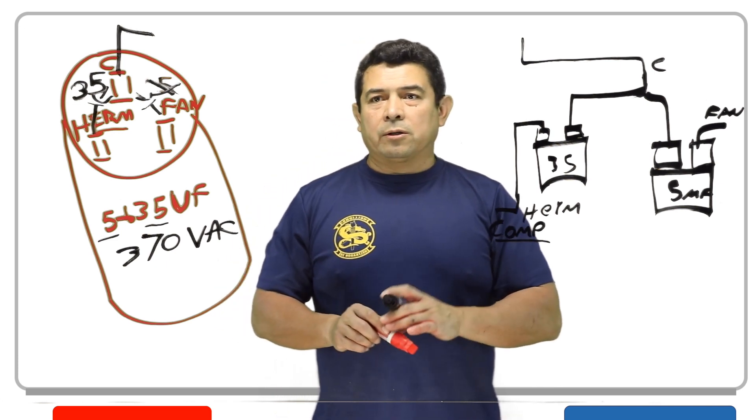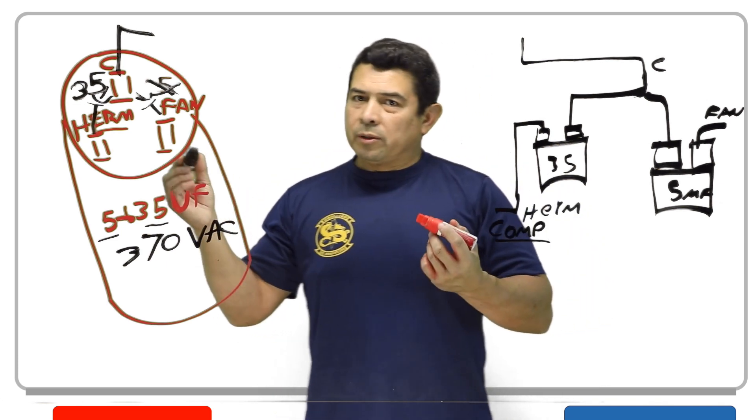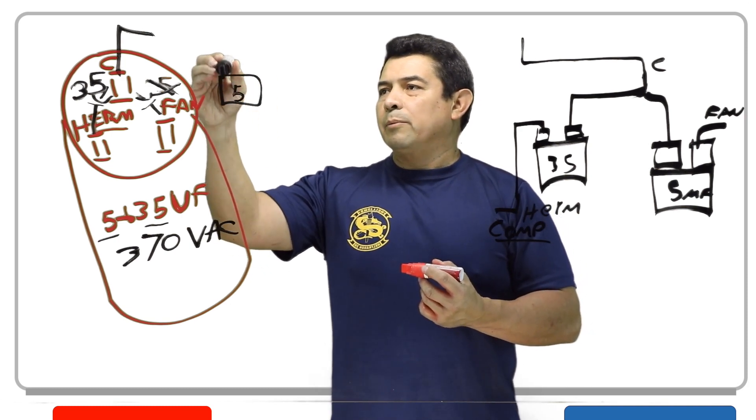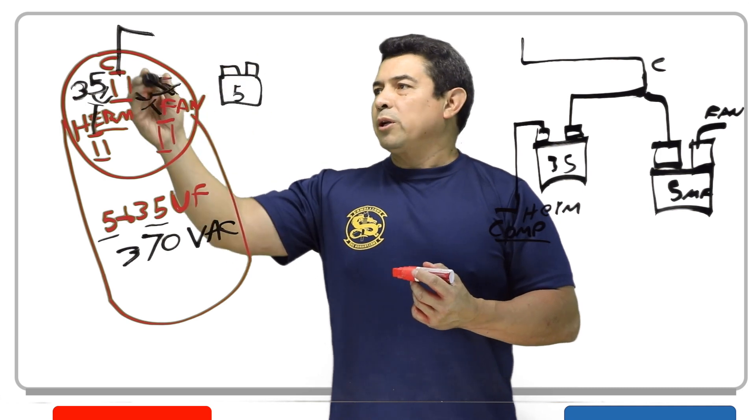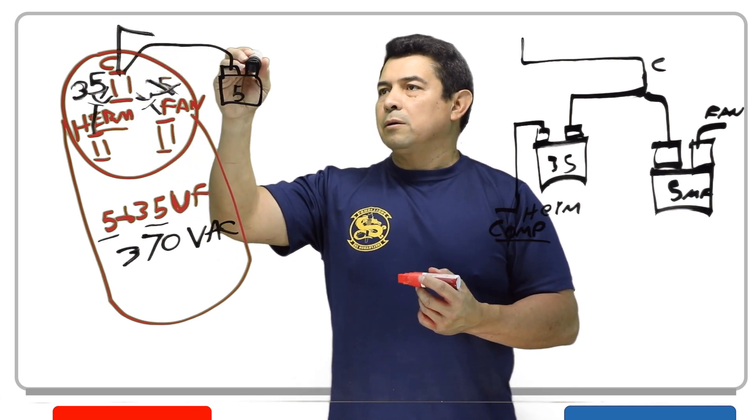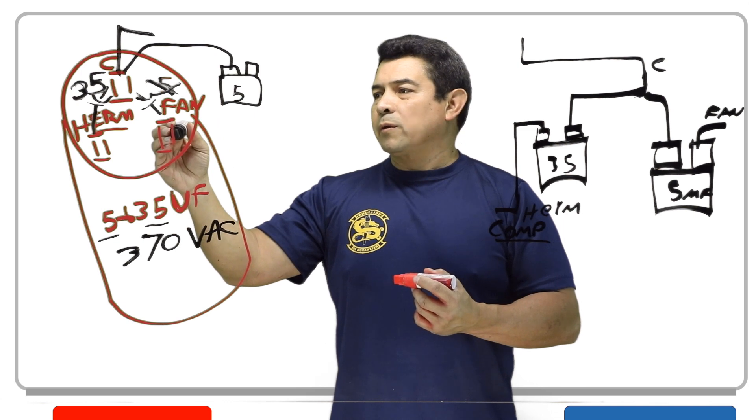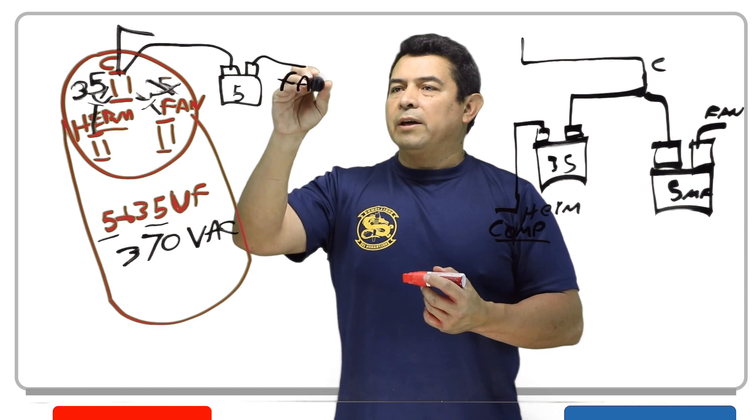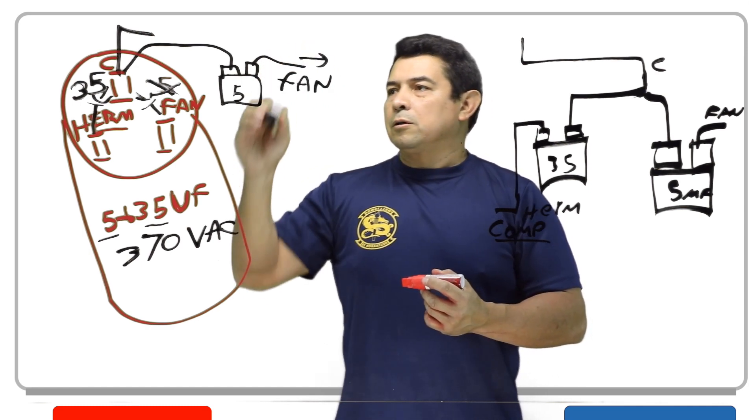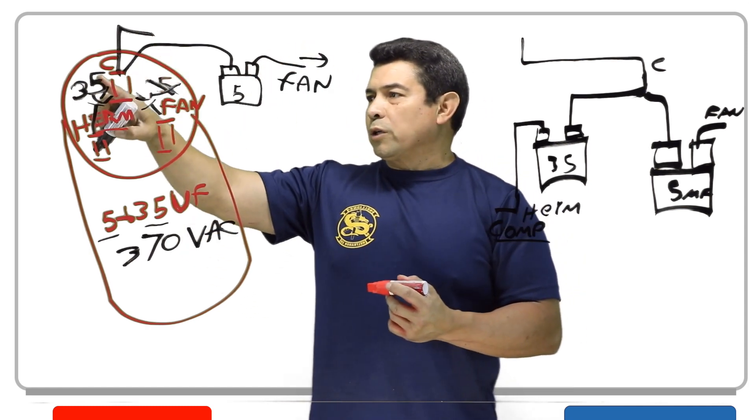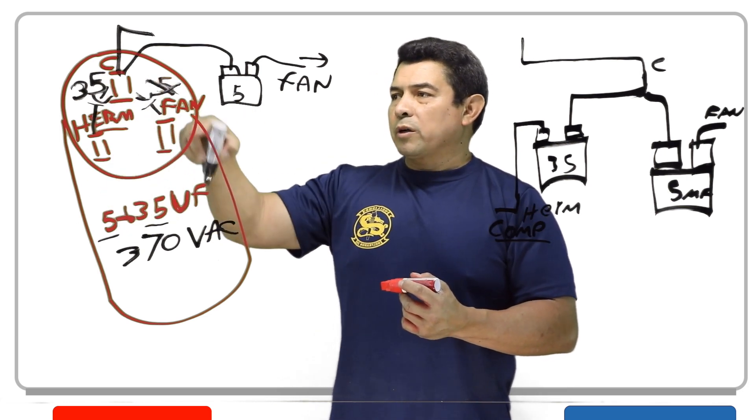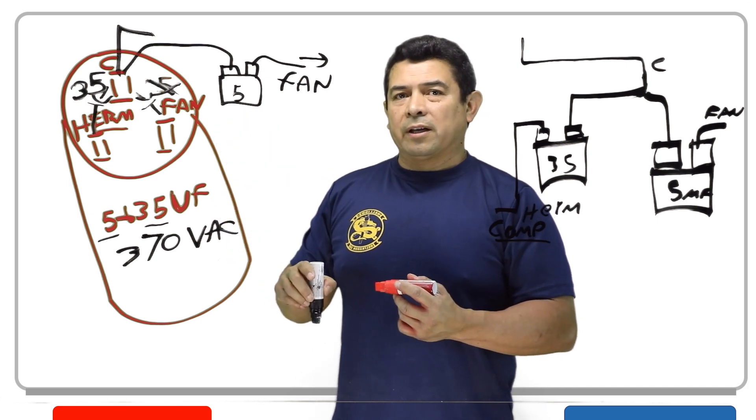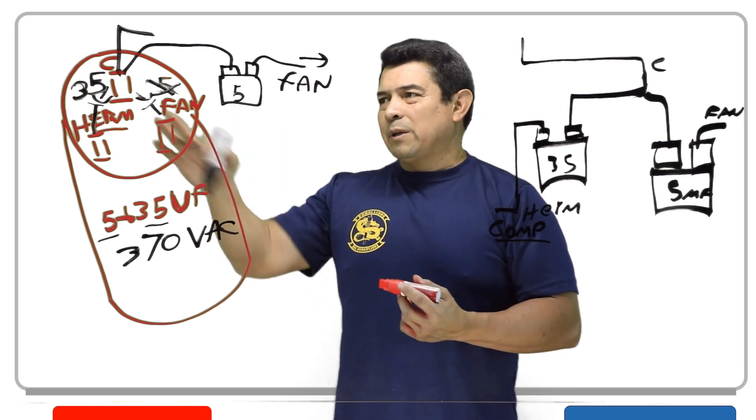The other choice that you could have, and I'm not too crazy about this one, but it'll work, is if we have, let's say, a 5 microfarad capacitor, you can put a jumper between here to here. And the wire that was hooked up to the fan, we're going to run up here to the fan like this. So now, we're still using this one, but now, since this side is bad, we're just replacing it with a brand new capacitor like this. And this should work. Like I said, I'm not too crazy about this.